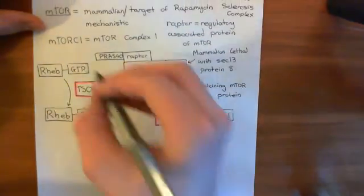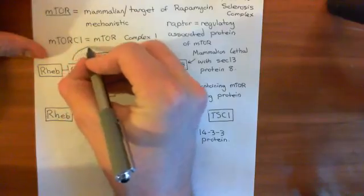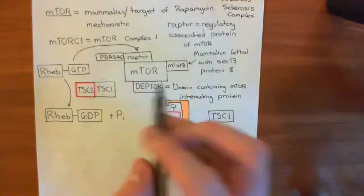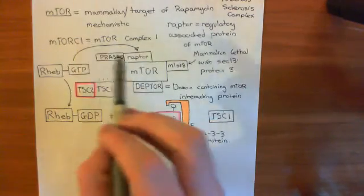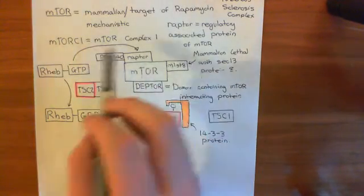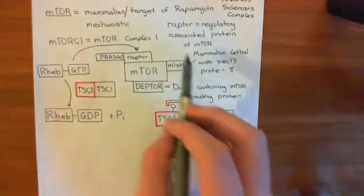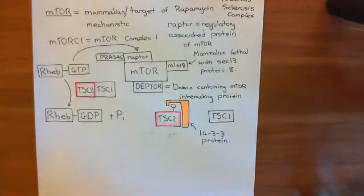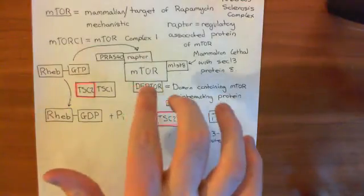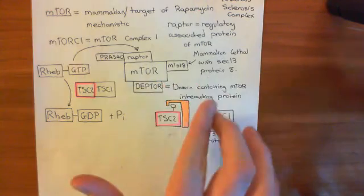RHEB-GTP, by unknown mechanisms, activates mTORC1 — the mammalian or mechanistic target of rapamycin complex 1. So that is one mechanism by which protein kinase B activates mTORC1.